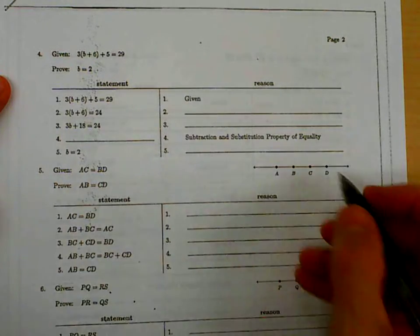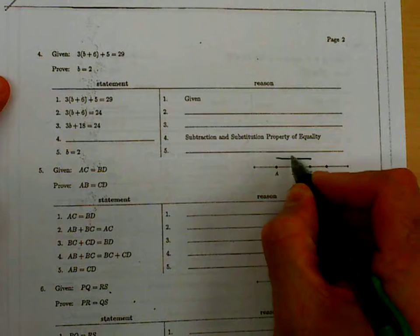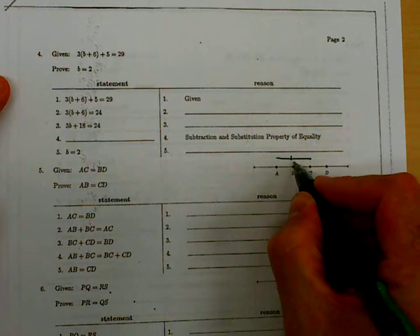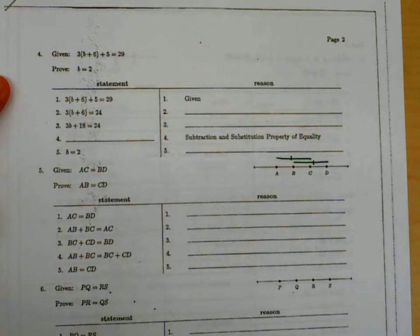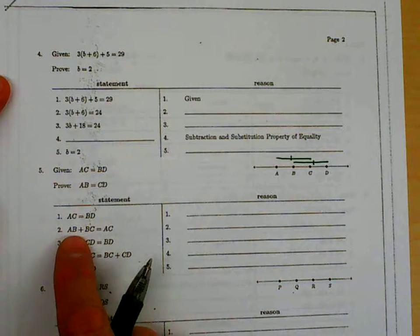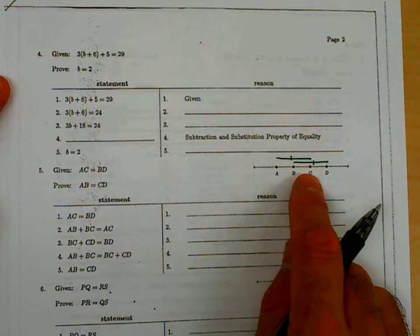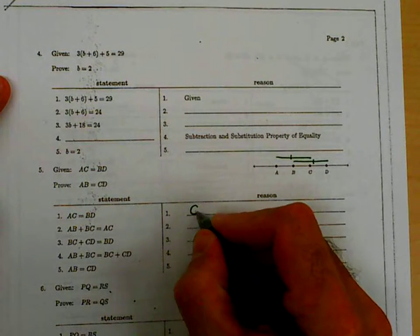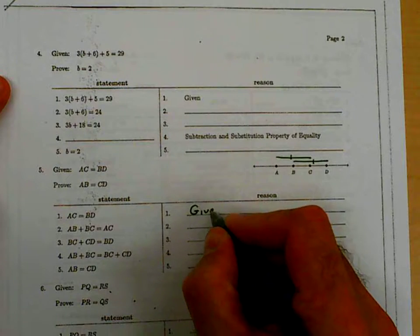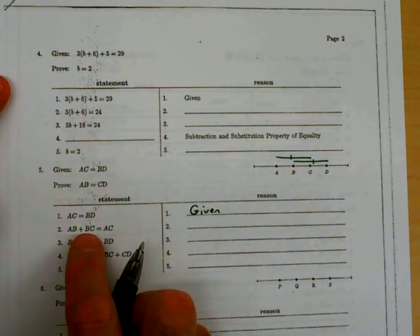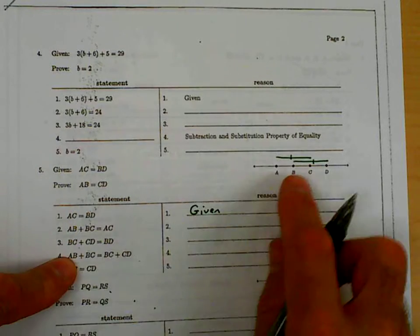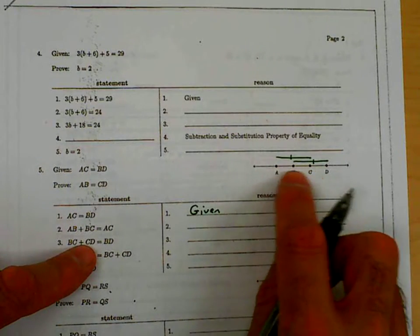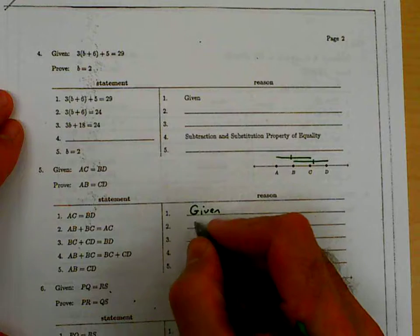The first thing they say is that AC is congruent to BD. So I mark that on my diagram just so I get some idea of what's happening. Then I have AB plus BC equals AC. Well, first of all, this was given. AC equals BD was given. Those lengths are equal. Then they have the two lengths that make up this segment are equal to the total length of the segment. So that's segment addition postulate.